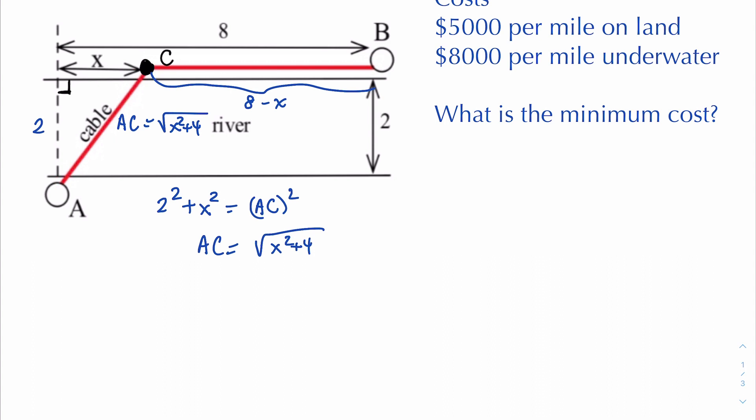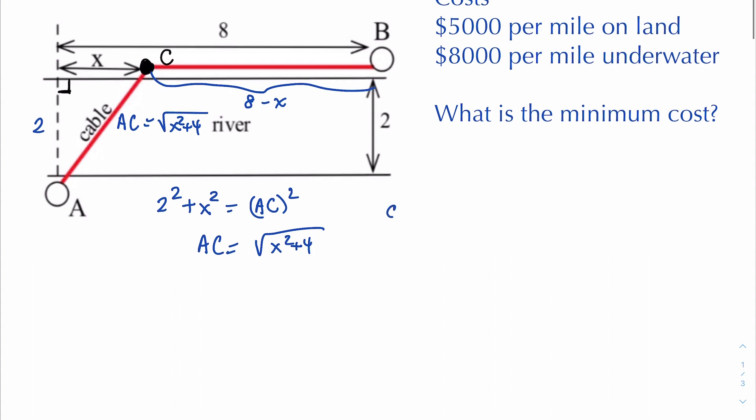So when we formulate our cost function we have to keep those two distances in mind. One distance is the square root of x squared plus 4 and that's going to cost us 8,000 per mile. So the total cost of that piece is 8,000 times the square root of x squared plus 4. The other piece is going to cost us 5,000 per mile and we're going 8 minus x miles. There's our cost function.